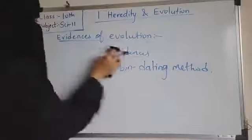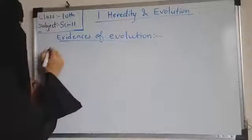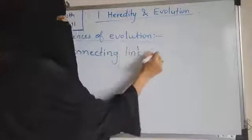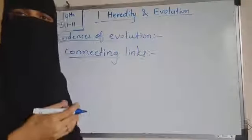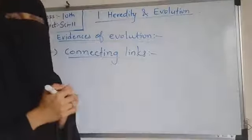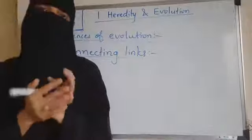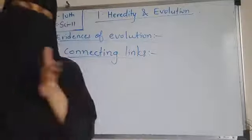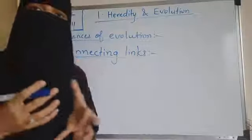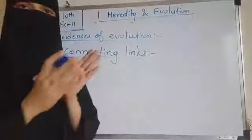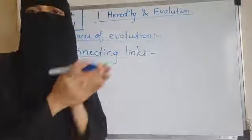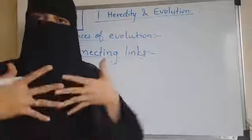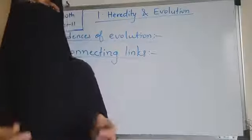Next we will see connecting links. Some plants and animals show morphological characters by which they can be related to two different groups — they have the characters of one group and also another group. Hence they are called connecting links, because they connect these two groups.